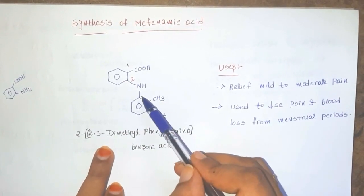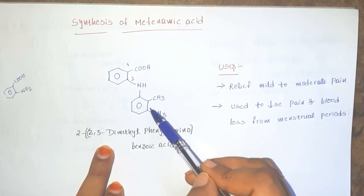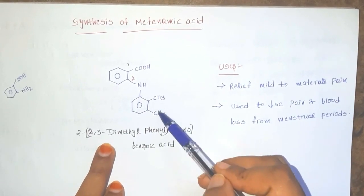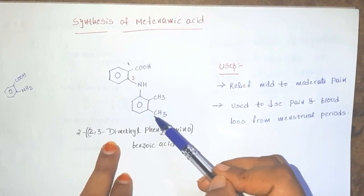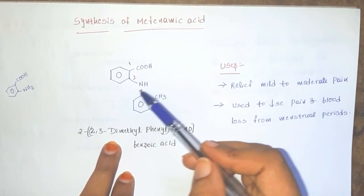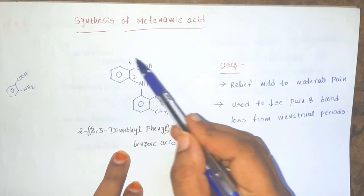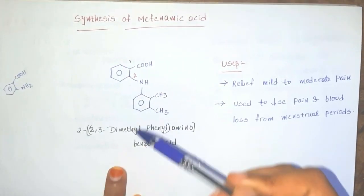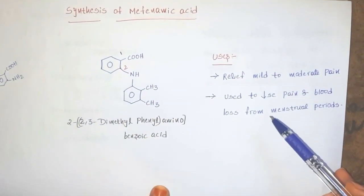This is number one, this is two, this is three. So dimethyl groups attached at 2,3 position. So it is called as 2,3-dimethyl phenyl amino benzoic acid.